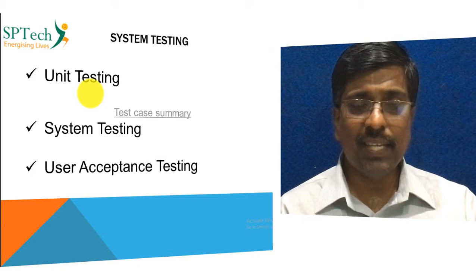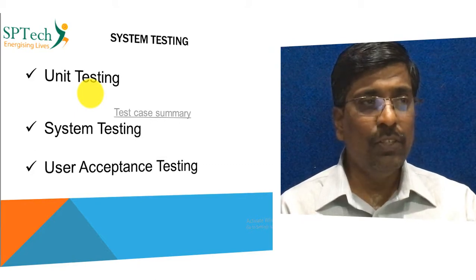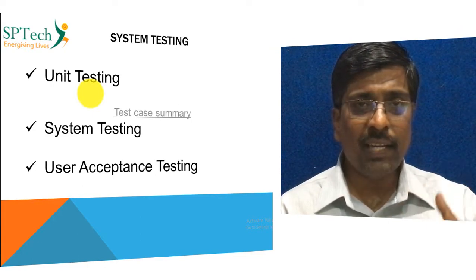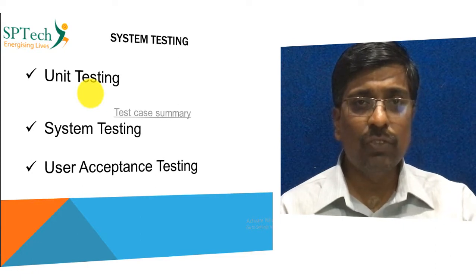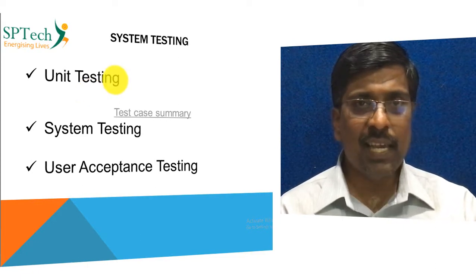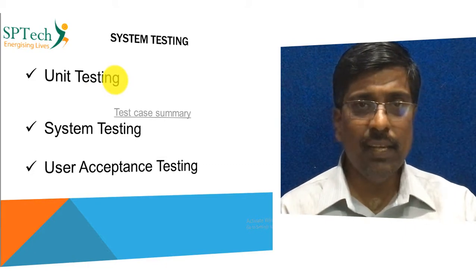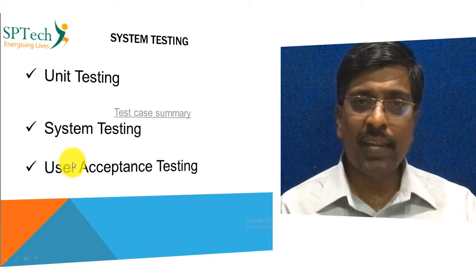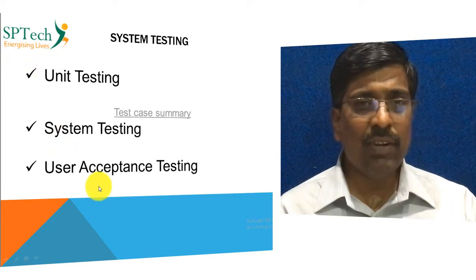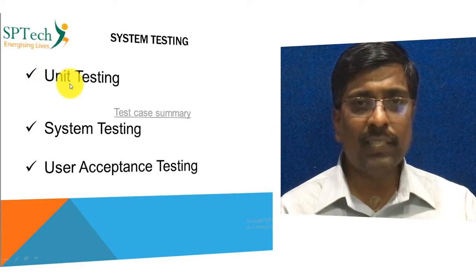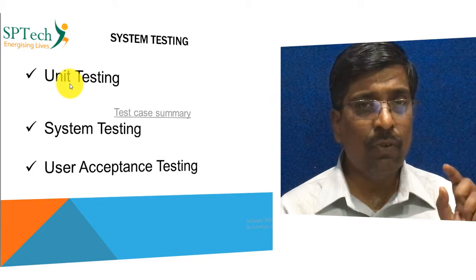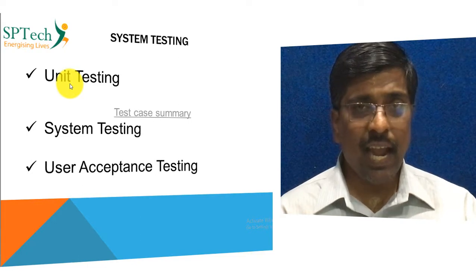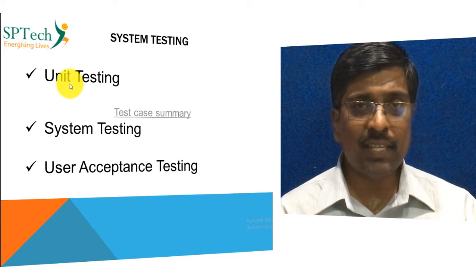Once you have completed the system implementation work, the next chapter is system testing. You need to clearly specify what different kinds of testing you have performed on your software. There are three types arranged in a hierarchy: first you do unit testing, then system testing, then finally user acceptance testing. Write a few paragraphs about how you performed each — not textbook notes, but how you actually did it in your project.